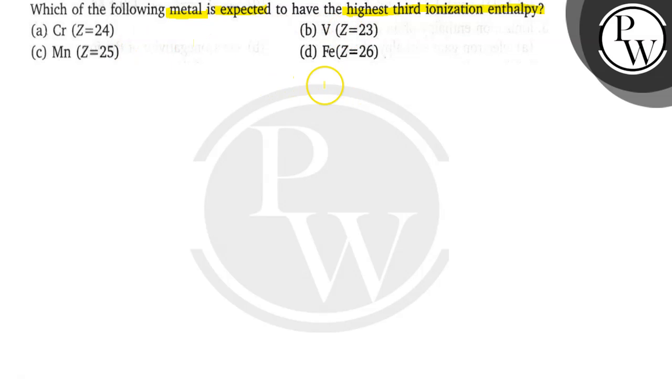Cr, V, Mn, and Fe. So if I write their electronic configuration, for Cr it's [Ar] 3d5 4s1.